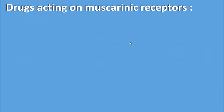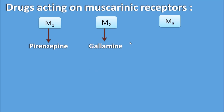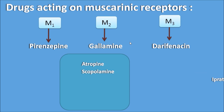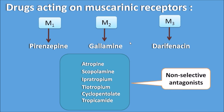Now let us see the drugs acting on the muscarinic receptors. We have selective blockers for M1, M2, and M3: M1 blocker is pirenzepine, M2 blocker is gallamine — though gallamine is not a complete blocker but a partial agonist also acting as a neuromuscular blocker — and M3 blocker is darifenacin. Other drugs including atropine, scopolamine, ipratropium, tiotropium, cyclopentolate, and tropicamide are all non-selective antagonists acting on muscarinic receptors.